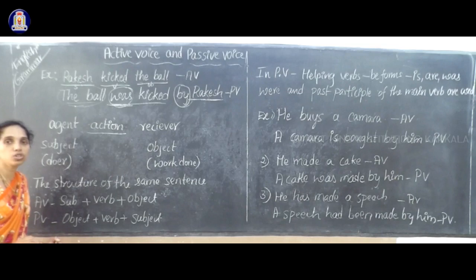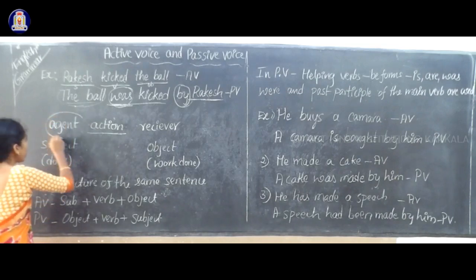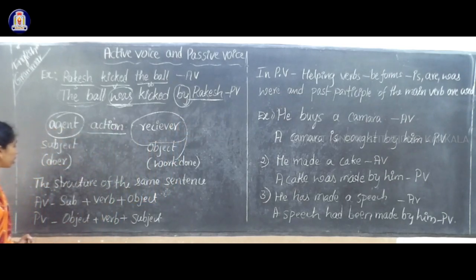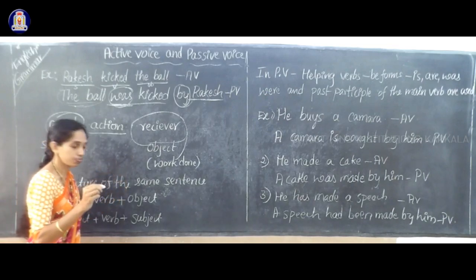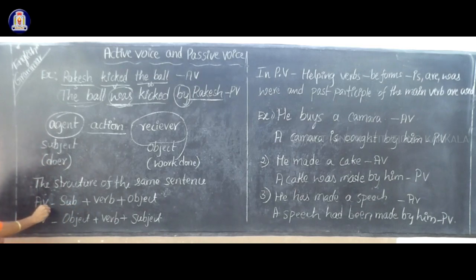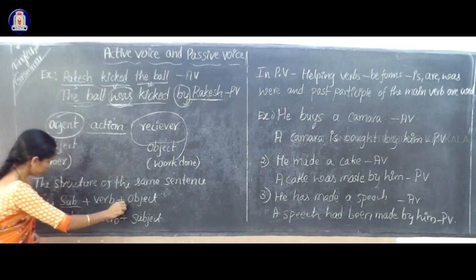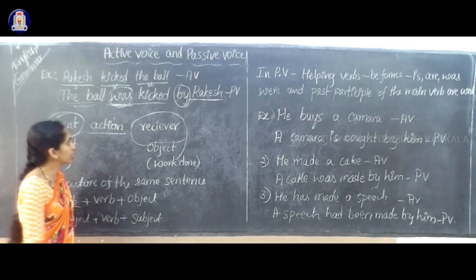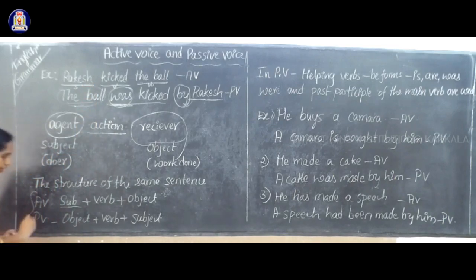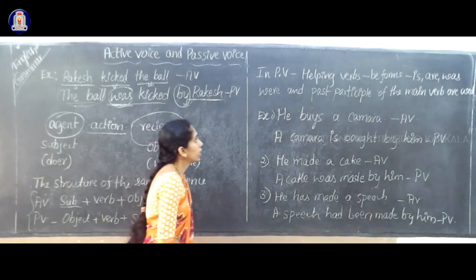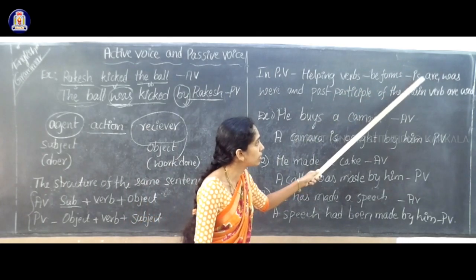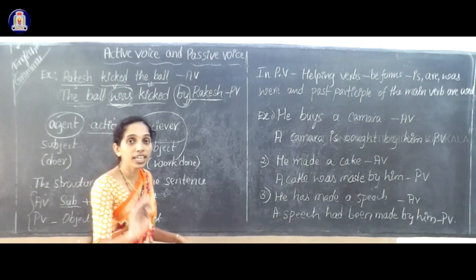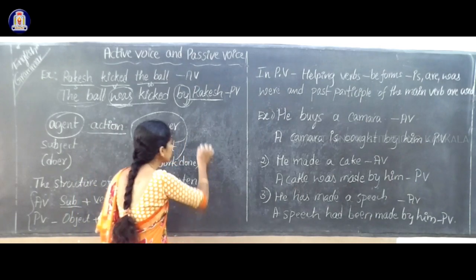In active voice: subject + verb + object. In passive voice: object + verb + subject — the order is reversed. In passive voice, helping verbs — the B forms: is, are, was, were — and the past participle of the main verb are used. When writing passive voice, we use the past participle form of the verb. For example: write → wrote → written. 'Written' is the past participle form of the verb 'write'. While writing passive voice, we always use the third form of the verb — the past participle form.